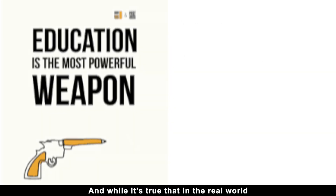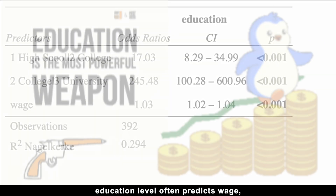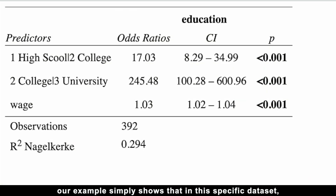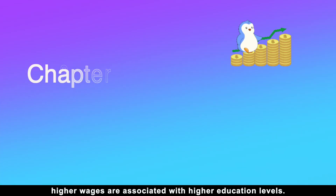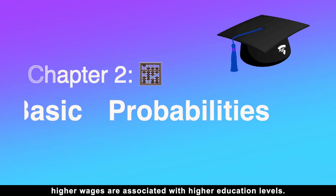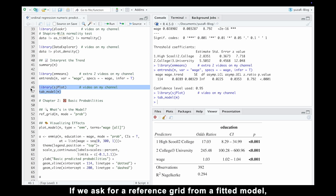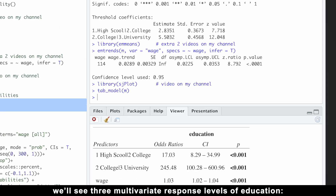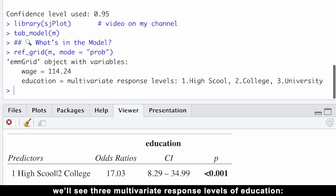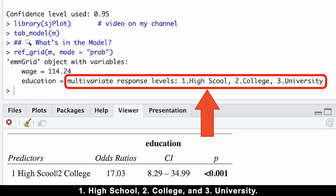And while it's true that in the real world education level often predicts wage, our example simply shows that in this specific dataset higher wages are associated with higher education levels. If we ask for a reference grid from a fitted model, we'll see three multivariate response levels of education — high school, college, and university.